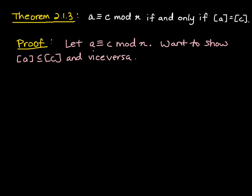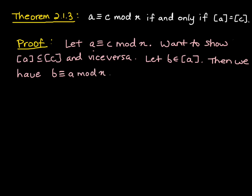Namely, we want to show that the congruence class of a is contained in the congruence class of c, and vice versa, and that will give us equality. So let's start with the first containment. Let b be some element in the congruence class of a. Then we know that b is congruent to a mod n. And since we assume that a is congruent to c mod n, we have b congruent to a mod n.